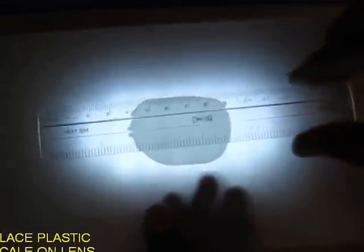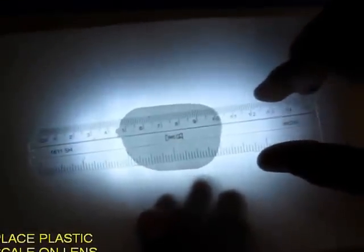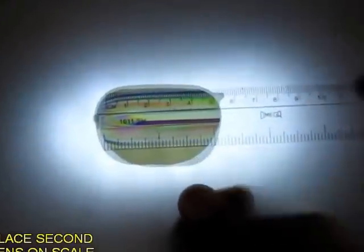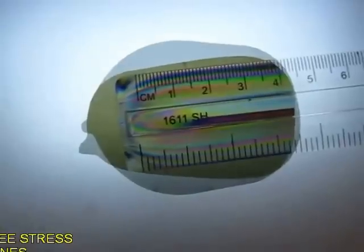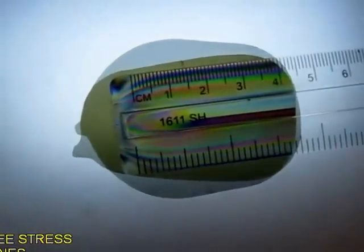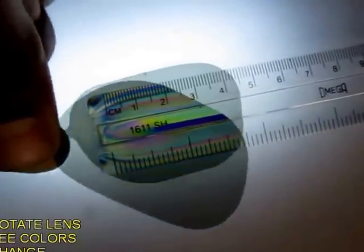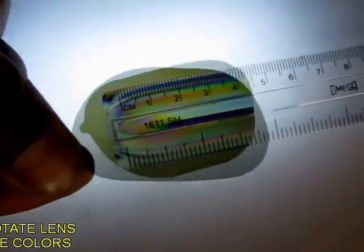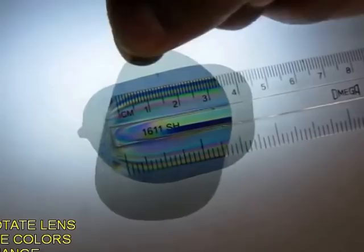Now place a plastic scale on top of one lens. This limits the vibration of the light. Place the second lens on top and you will see beautiful colored lines. These are stress lines.